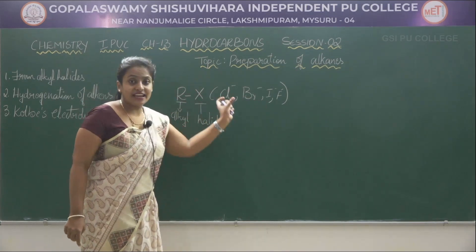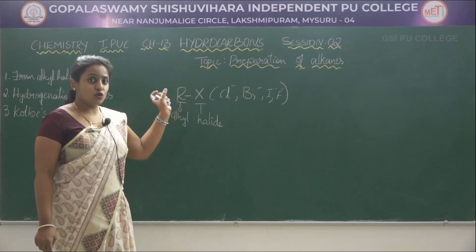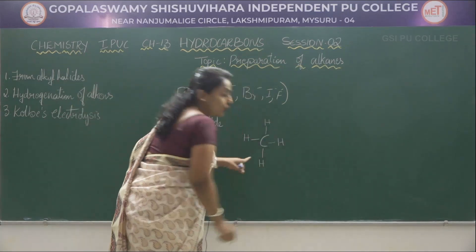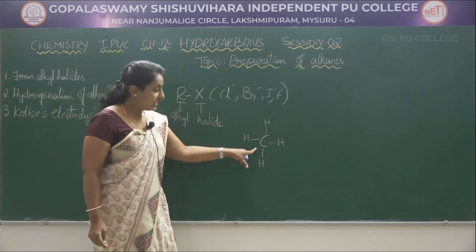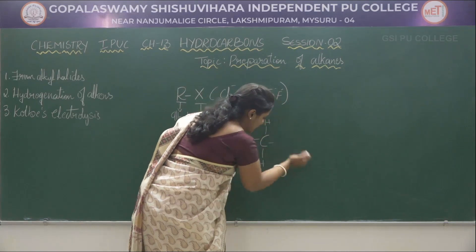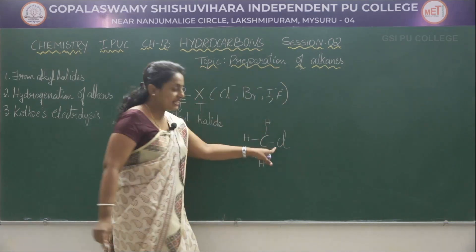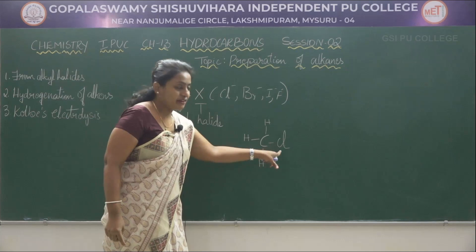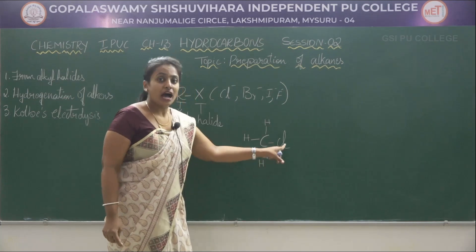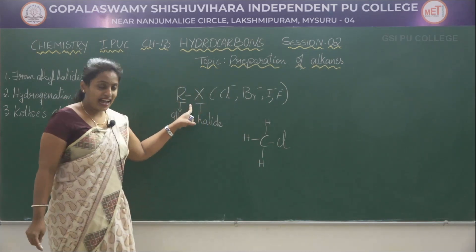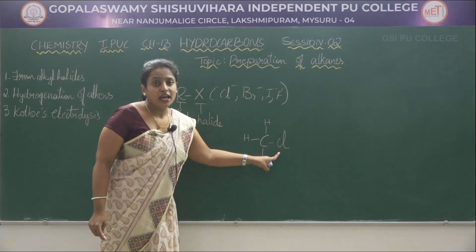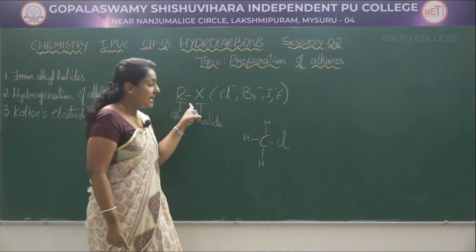How do we get this alkyl halide? This alkyl halide is obtained by replacing one of the hydrogens from the alkane. For example, when you consider methane, one of the hydrogen atoms is replaced by the halogen atom like chloride. This gives rise to methyl chloride, which is an alkyl halide. Therefore, this alkyl halide is obtained by replacing one of the hydrogens of the alkanes by the halide atom.